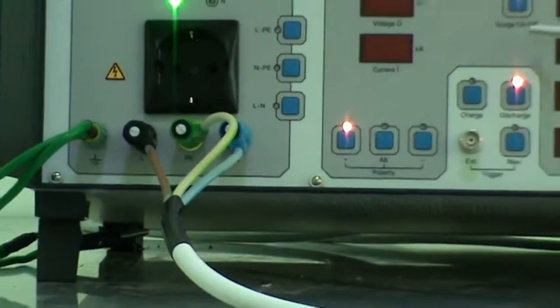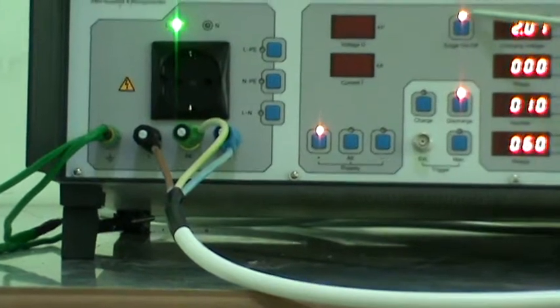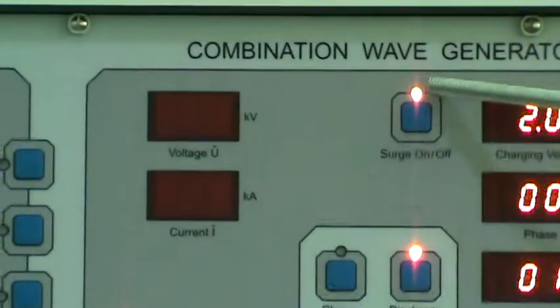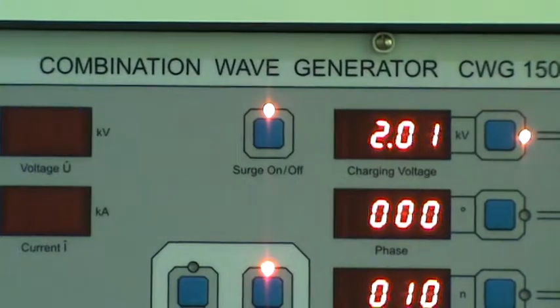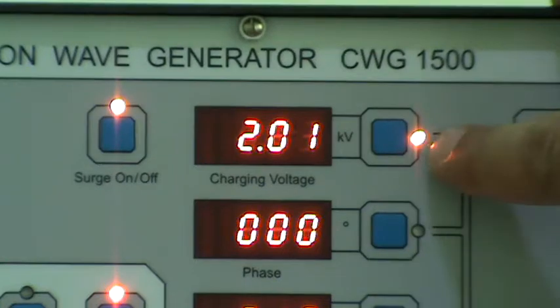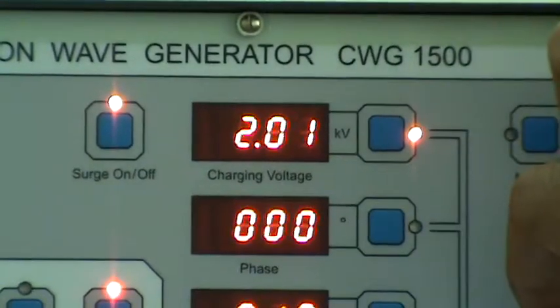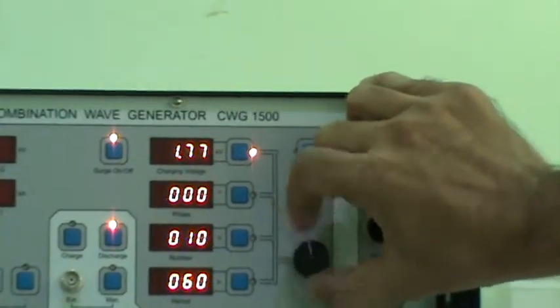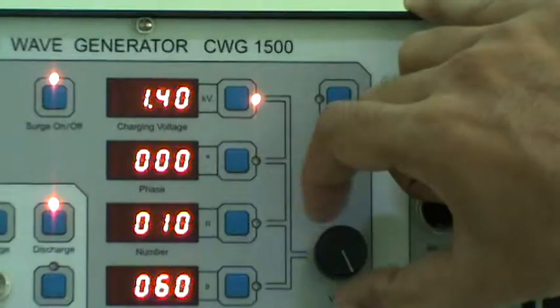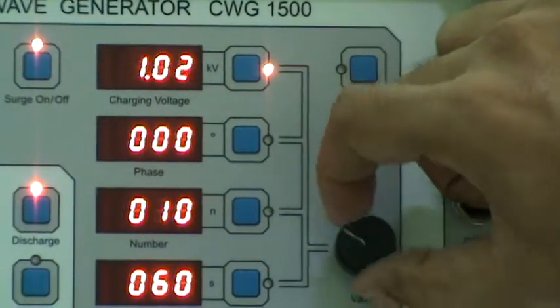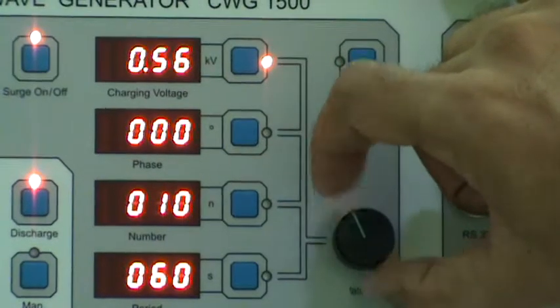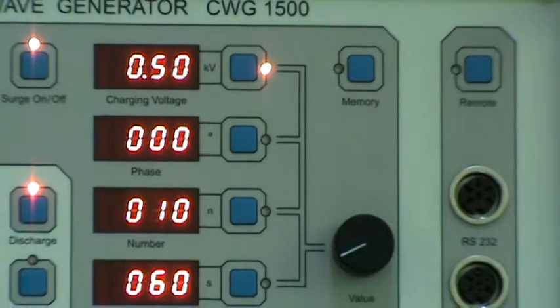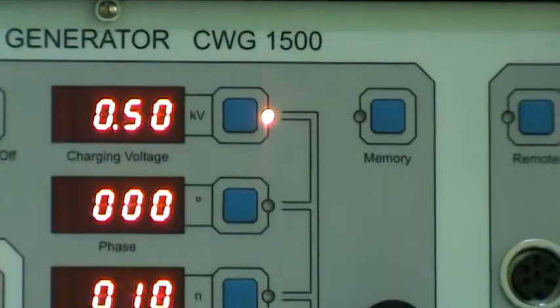Now testing the immunity from CWG. First we have to see this surge on/off, this LED is glowing. By pressing this button it can be off and on. It should always be on. First we will set the voltage in KV. By pressing this button this LED should glow and by rotating this encoder, let it select to 0.5 KV. This is the charging voltage for surge in KV.